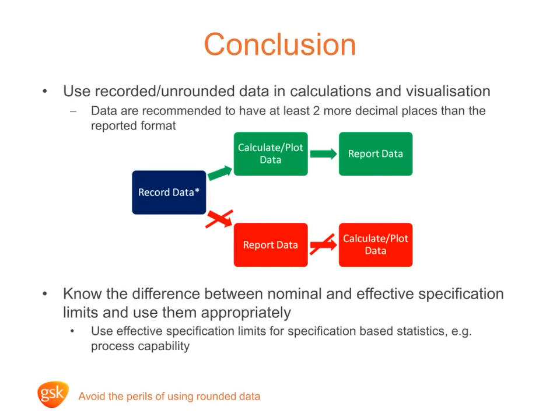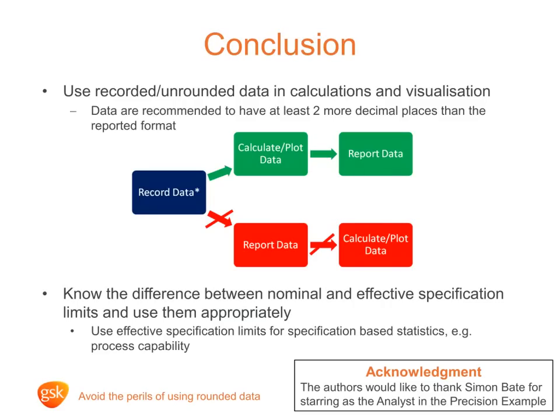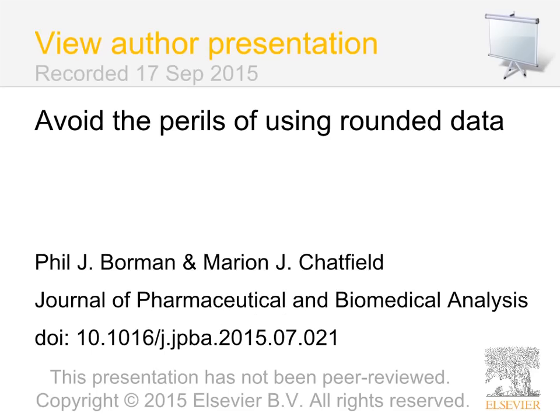From the two examples covered, we hope it is clear why it is always better to work with recorded data for calculations and visualisation. Remember the rule of thumb: ensure you have at least two more decimal places in your data than the reported format of a final result. It is important to understand the difference between nominal and effective specification limits and when they should be used — always use effective specification limits when calculating specification-based statistics. Marion and I would like to thank Simon for starring as the analyst in the precision example.